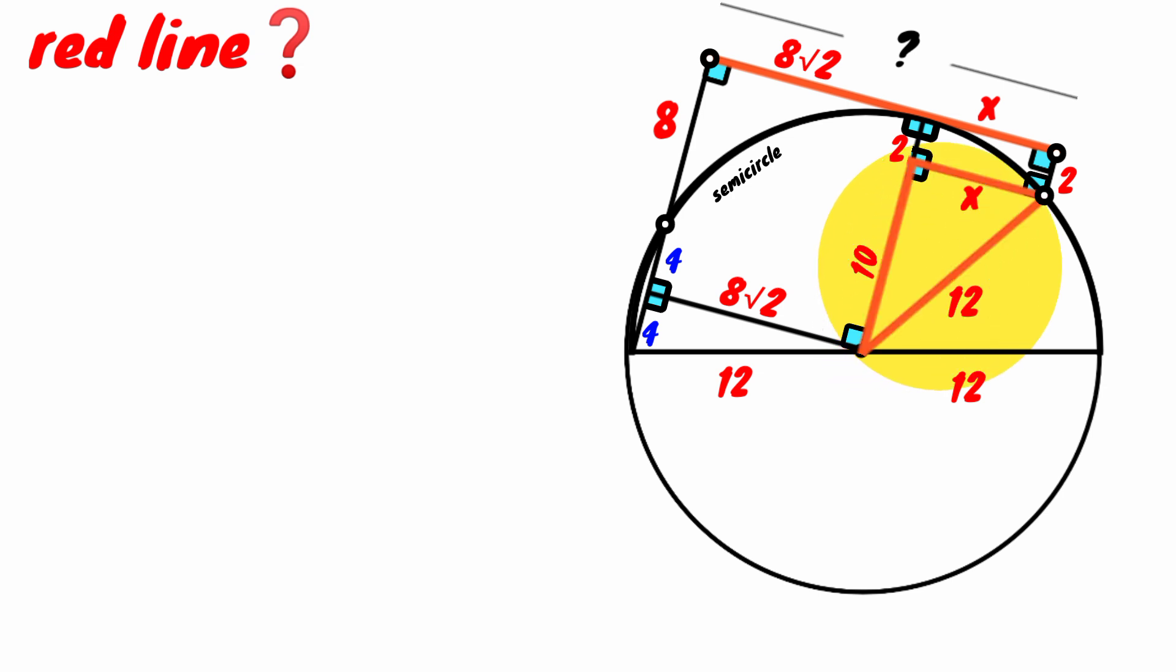If we use the Pythagorean theorem here, this is the hypotenuse. The square of its length must be equal to the sum of the squares of this 10 and this X. So 12 squared equals 10 squared plus X squared. 10 squared is 100. 12 squared is 144. Take 100 to the left. 144 minus 100 is 44.